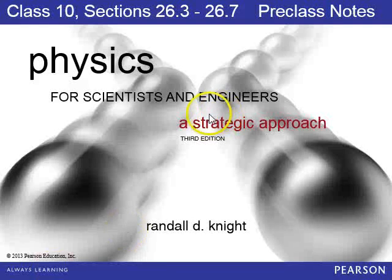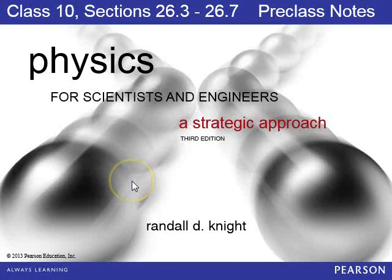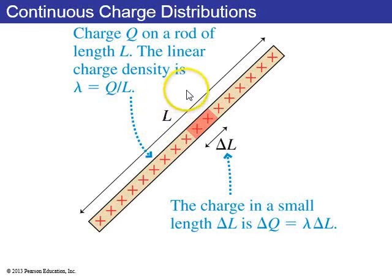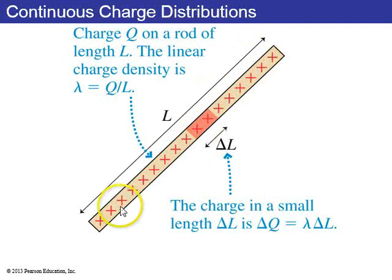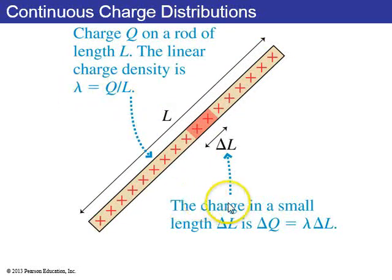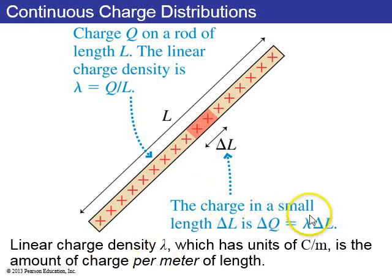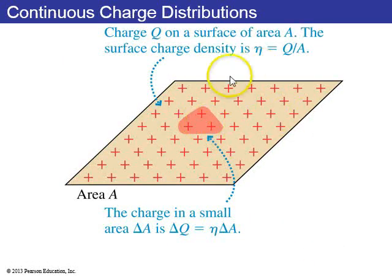We're continuing with chapter 26 on electric fields, considering continuous charge distributions such as a rod of length L and charge Q. It has a charge density lambda equals Q over L, with units of coulombs per meter.